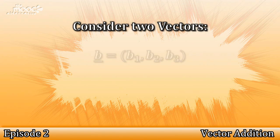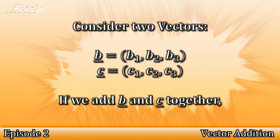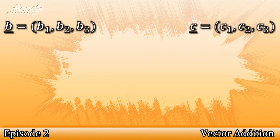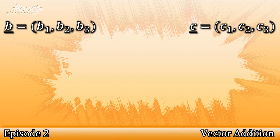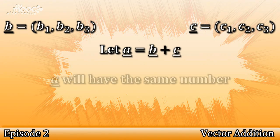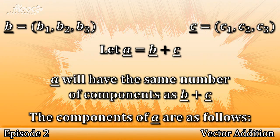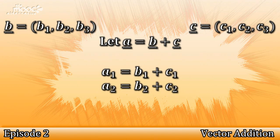Consider two vectors such as b = (b1, b2, b3) and c = (c1, c2, c3). If we add these two vectors together, the result is another vector. This is because we add together each component of each vector. So let vector a be equal to b plus c. Because we're adding together each component of b and c, a will have the same number of components as b and c. The values of a are: a1 = b1 + c1, a2 = b2 + c2, and a3 = b3 + c3.